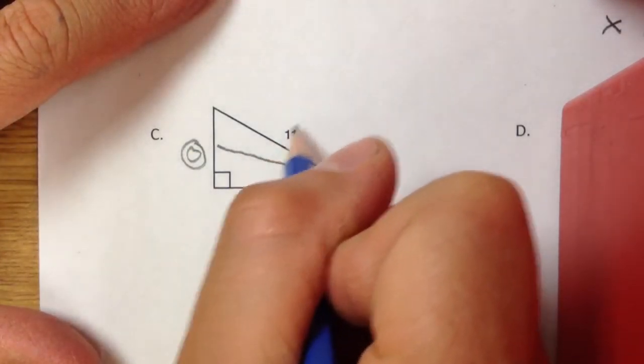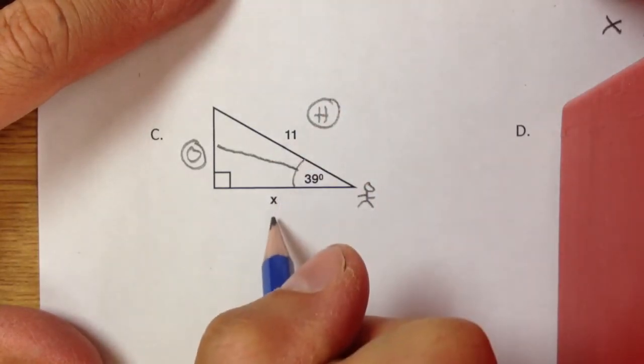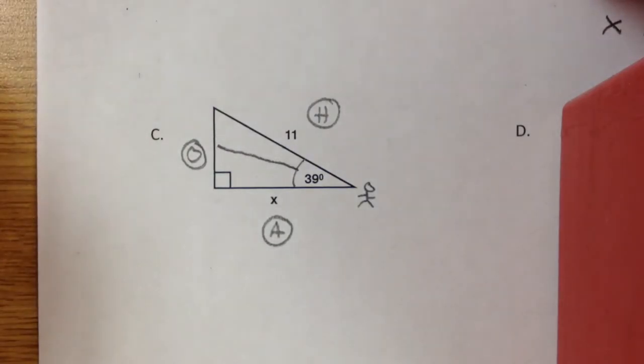This would be your 11, which is your H, and your X would be your A. Now that you've labeled the different sides of your triangle, the next thing to do is figure out...